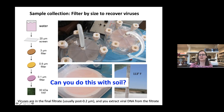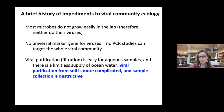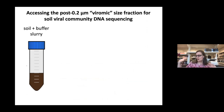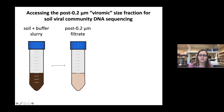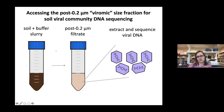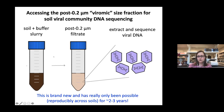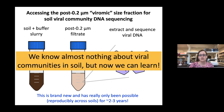But how do you do this in soil? You can't filter soil through a tiny filter. What we actually do is add a buffer to create a soil-and-buffer slurry, spin that slurry in a centrifuge to pellet the soil particles, then put it through 0.2-micron filters to get the viruses, and then extract and sequence the viral DNA. This is a brand new approach — we've only been able to do this reproducibly across many different soils for the last two to three years.